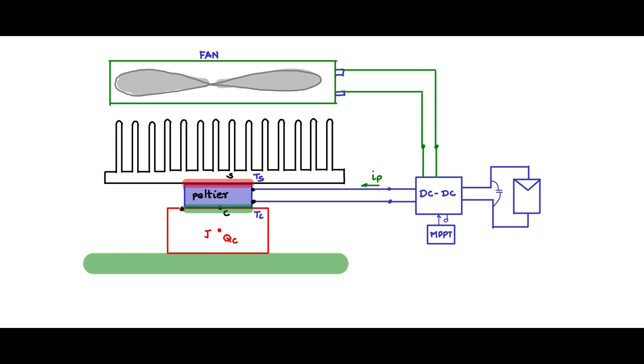Now the object to be cooled is directly in contact with the cold junction of the Peltier element. Now the Peltier element, in order to pump QC amount of heat from the cold junction to the hot junction, it needs electric power.